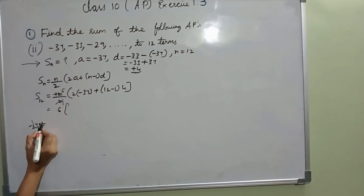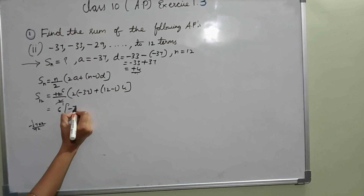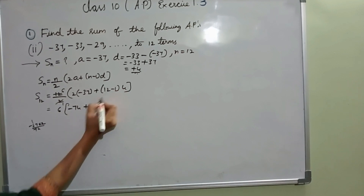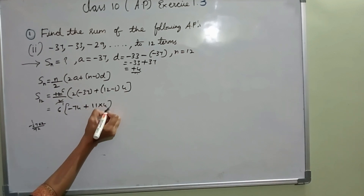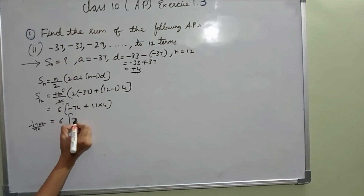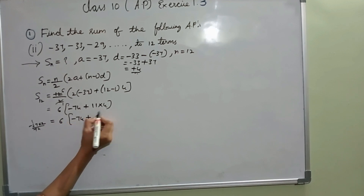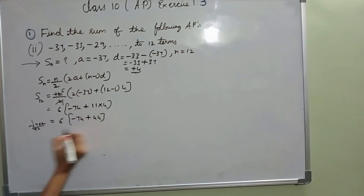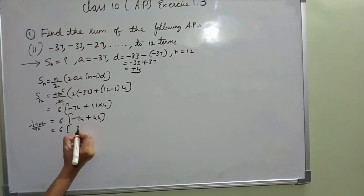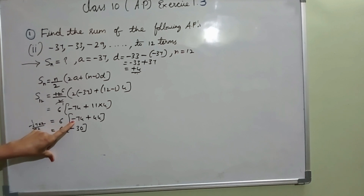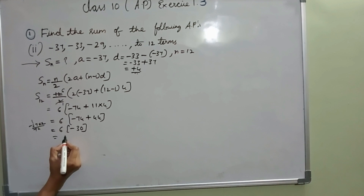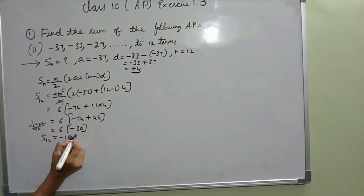Simplifying: 6 into 2 times minus 37 is minus 74. Then 11 into 4 is 44. So 6 into minus 74 plus 44. Minus 74 plus 44 is minus 30. Since the greater number sign is minus, we write minus. 6 into 30 is minus 180. So S12 value is minus 180.